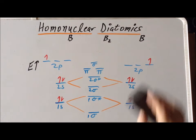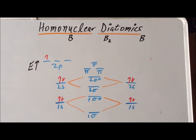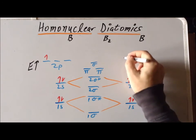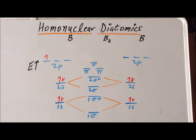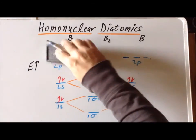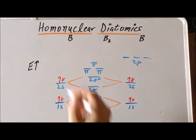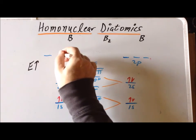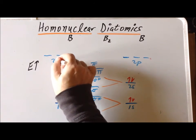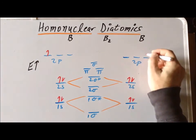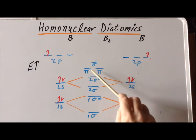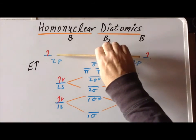Let me redraw this to emphasize that the pi bonding and the sigma bonding combinations are lower in energy than the 2p orbitals from which they originated.